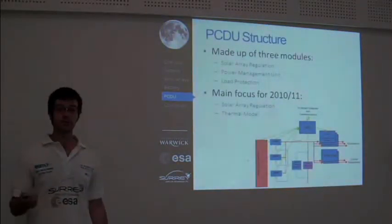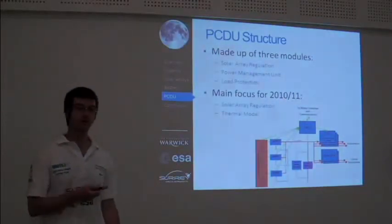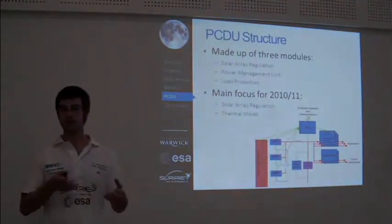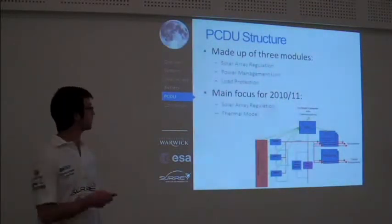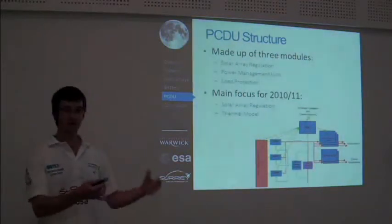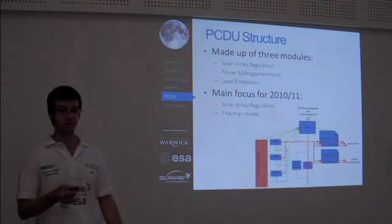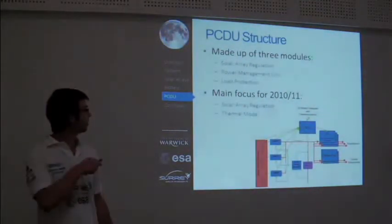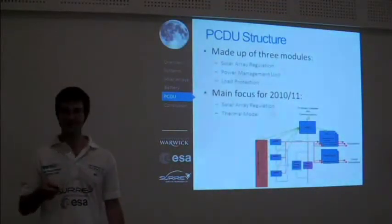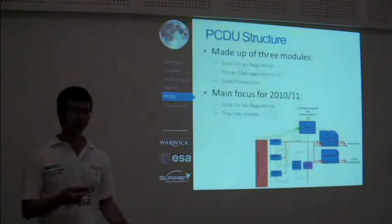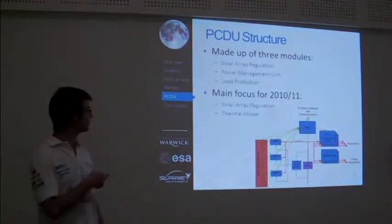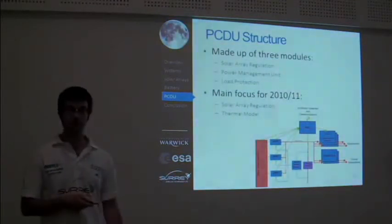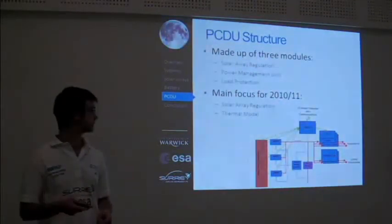We've already heard about the solar array and the battery. The PCDU is a piece of custom hardware produced and built by the OREC EPS team, and its function is to tie together the solar array with the battery and the other subsystems which use power. It consists of three main parts: solar array regulation, which takes power from the solar array and is capable of charging the battery; load protection, which protects the EPS from faults in other subsystems; and the power management unit, which monitors system health and reports to the onboard computer. The main focus for this year's team was determining the best form of solar array regulation and developing a thermal model of the PCDU.